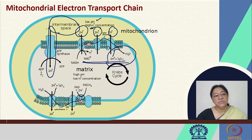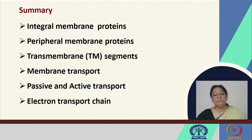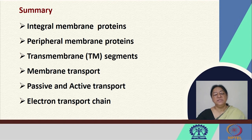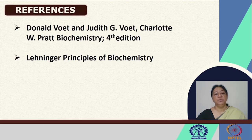We looked at a series of membrane-bound proteins. In this module on membrane proteins, we covered integral membrane proteins, peripheral membrane proteins, transmembrane segments, membrane transport, passive and active transport, and finally the electron transport chain. This is an extremely important topic for membrane proteins and protein chemistry in general because it involves the very important process of oxidative phosphorylation. This is the end of module 9: membrane proteins and transport.